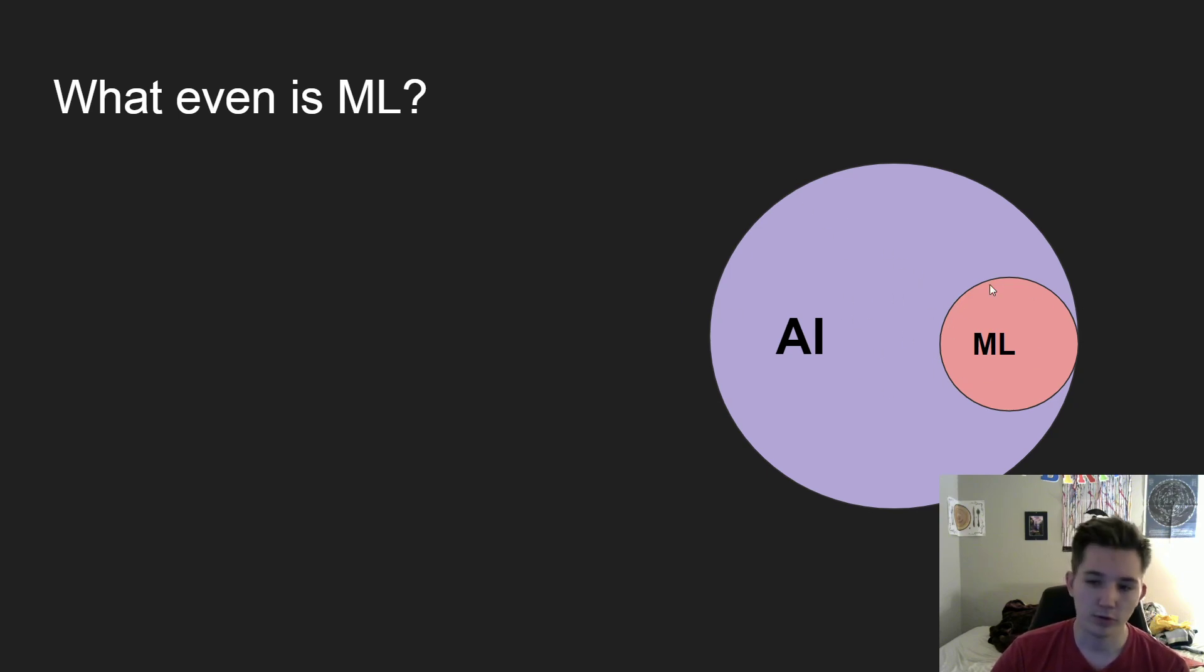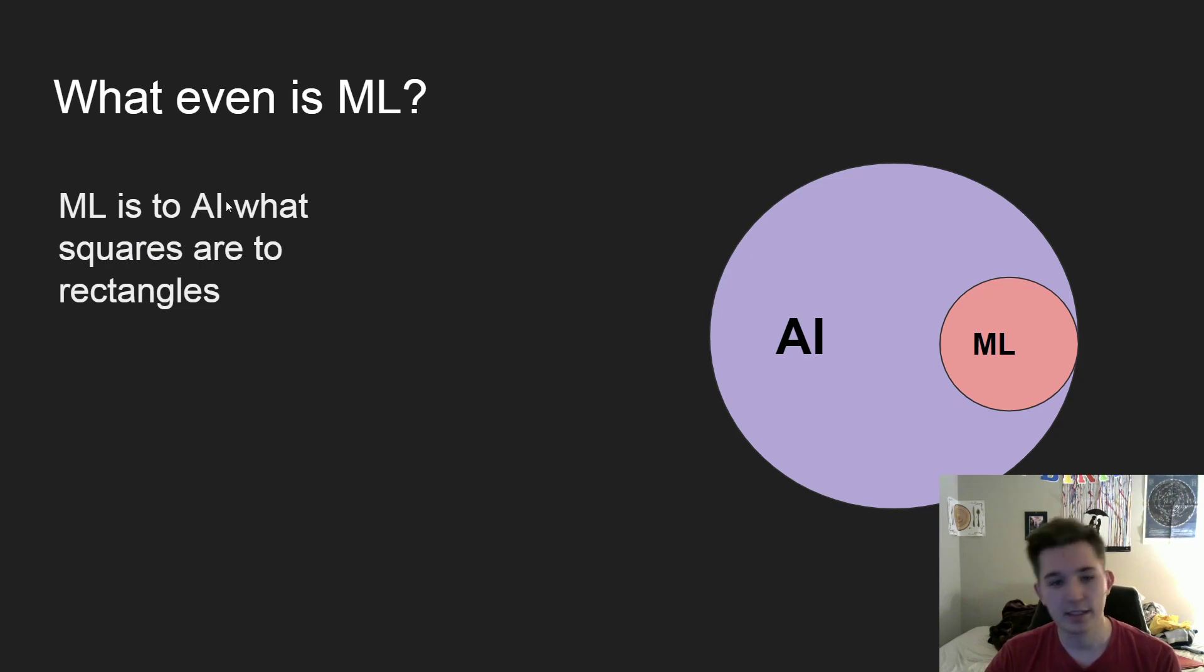It's a more niche approach to making AI. You can sort of think of it as ML being related to AI the same way squares are to rectangles. It's an example of it, but it does not make up all of it. Or you could think of it as what bones are to people, kind of an integral part.